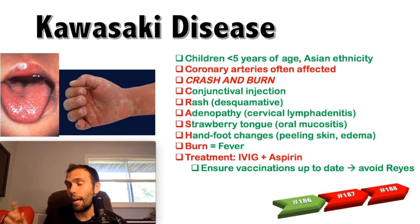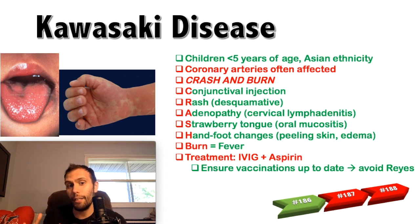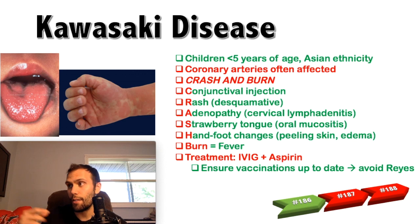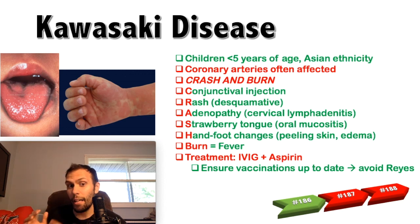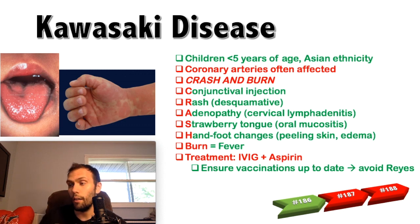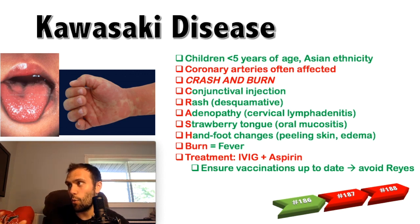The coronary arteries are particularly high yield to remember with this disease. Death can commonly occur from a myocardial infarction due to thrombus formation inside aneurysms that form in the coronary arteries. Coronary artery aneurysm formation is the biggest concern in children with Kawasaki disease. If a very large aneurysm develops, it can also rupture, which is also fatal.